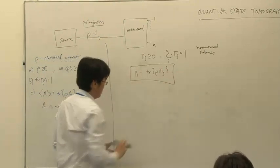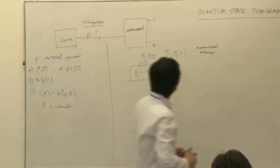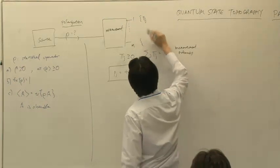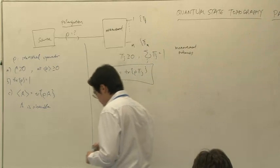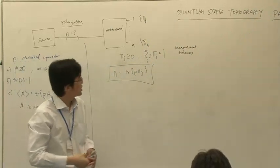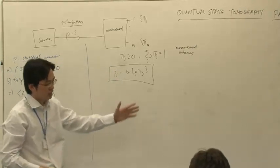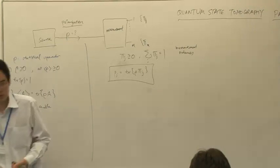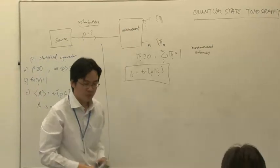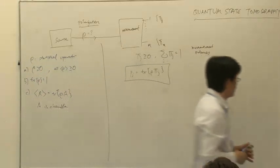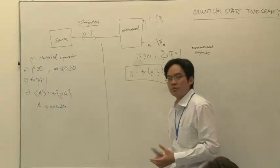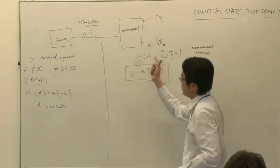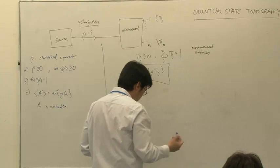In an experiment, for each outcome there is a probability p_j that a particular outcome occurs, related to the statistical operator via Born's rule: p_j equals the trace of rho times Pi_j. These measurement outcomes are a mathematical representation of a collection of components in a particular quantum channel. For example, in a Stern-Gerlach experiment you will have magnets and detectors; in a quantum optics experiment you will have wave plates, photodetectors, prisms, and so on. A collection of these components makes up this positive operator.